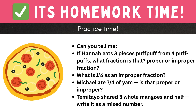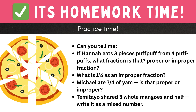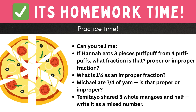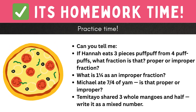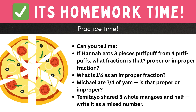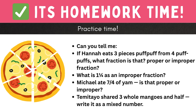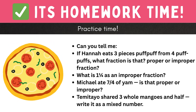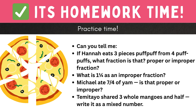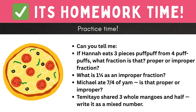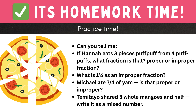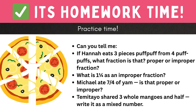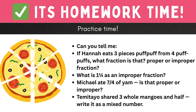It's homework time! Before you take a break, answer this: If Hannah eats three pieces of puff puff from four puff puffs, what fraction is that? What is one and one quarter as an improper fraction? Michael eats seven fourths of yam — is that proper or improper? Temitayo shared three whole mangoes and a half — write it as a mixed number. You are the smartest children in Nigeria, princes and princesses of fractions!